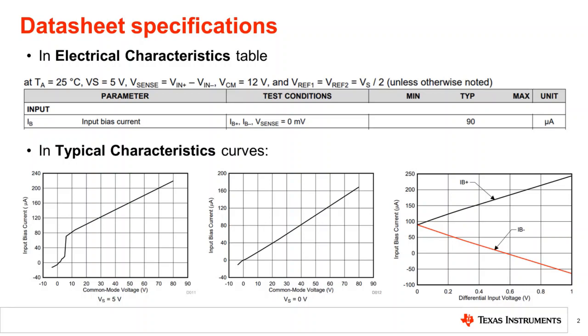As an example in this datasheet IB is specified under the default condition namely VS equals 5 volts, VCM equals 12 volts, VREF1 and VREF2 both equal to 2.5 volts and VSENSE equals 0 millivolts. Under this condition the negative and positive input bias currents are typically both 90 microamps.